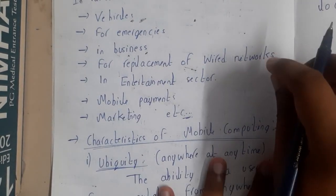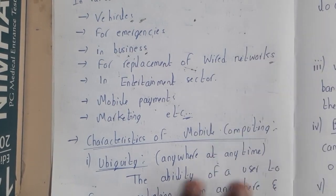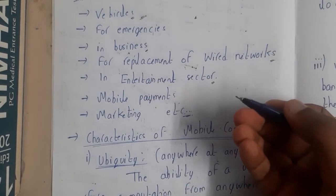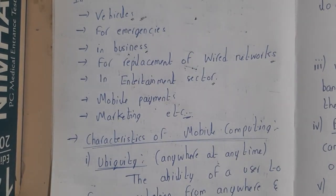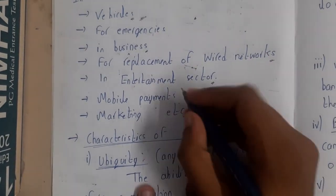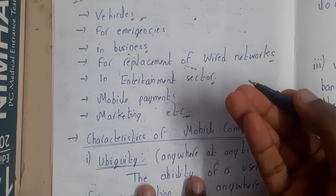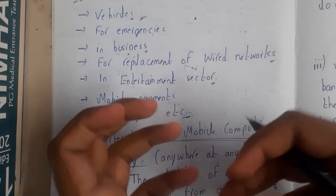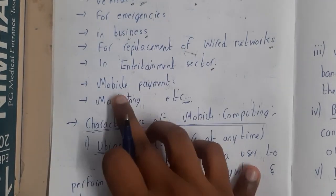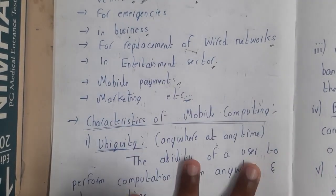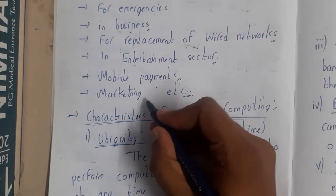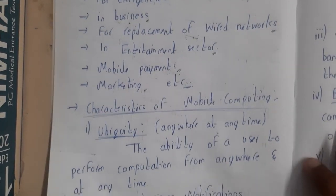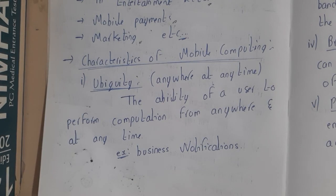In business, there are various applications you can check. Similarly, mobile computing enables the replacement of wired networks, since everything was previously fixed and wired. In the entertainment sector — for example, in movie productions — drones controlled by remote control are a great example. Also, mobile payments are widely used today, and there are applications in marketing as well.